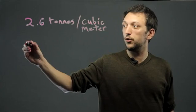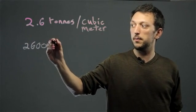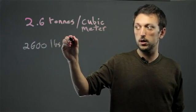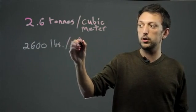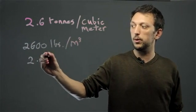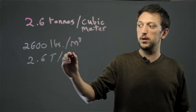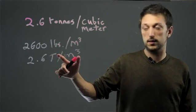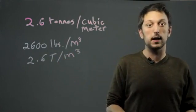So you can either put 2,600 lbs. pounds per meter cubed or you can say 2.6 T per meter cubed if you have a key that says that the T represents tons and not temperature or something else.